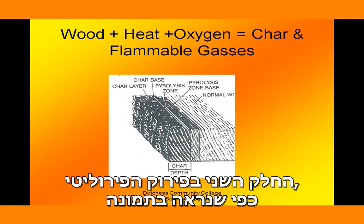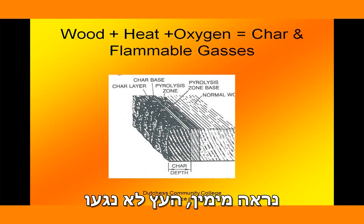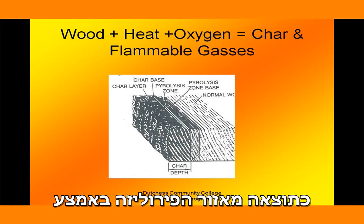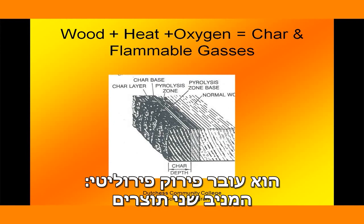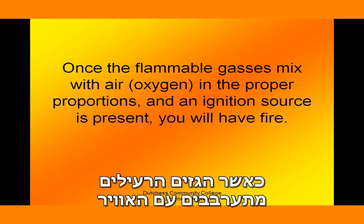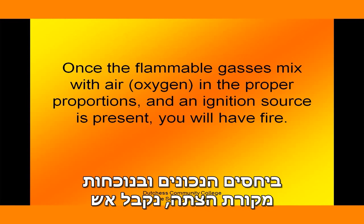The other byproduct of pyrolytic decomposition is char. On the right the wood is untouched, on the left it's charred, as a result of the pyrolysis zone in the middle. So regular wood, when heated up and exposed to oxygen, undergoes pyrolytic decomposition which produces two byproducts: char, and — more importantly — flammable vapors. Once those flammable gases mix with air or oxygen in the proper proportions and an ignition source is present, you've got fire.